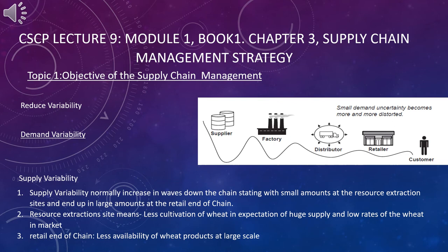Let's discuss demand variability, illustrated by the bullwhip effect. A customer places a sudden, random, unrealistic order — say 500 units. The retailer thinks demand is high and orders 1,000; the distributor orders 1,500; the factory orders 2,000; and the supplier produces 2,500. So all the way up the chain there is a bullwhip effect — small demand uncertainty becomes more and more distorted as it moves upstream.